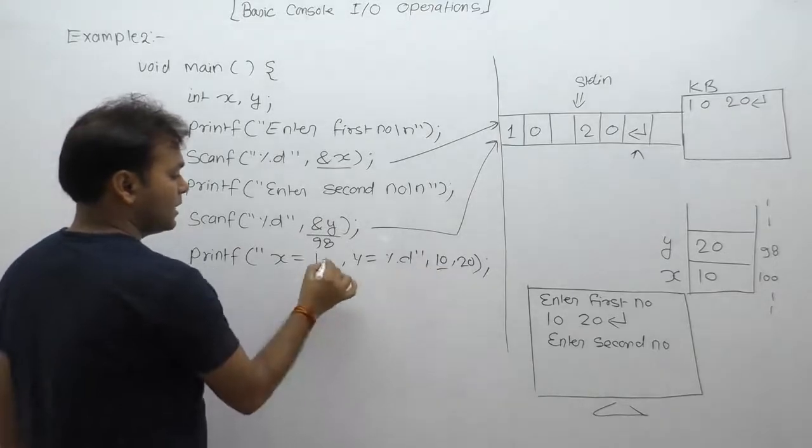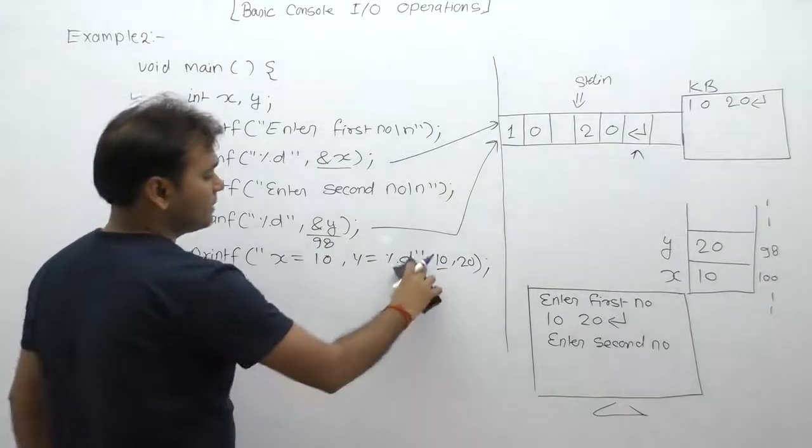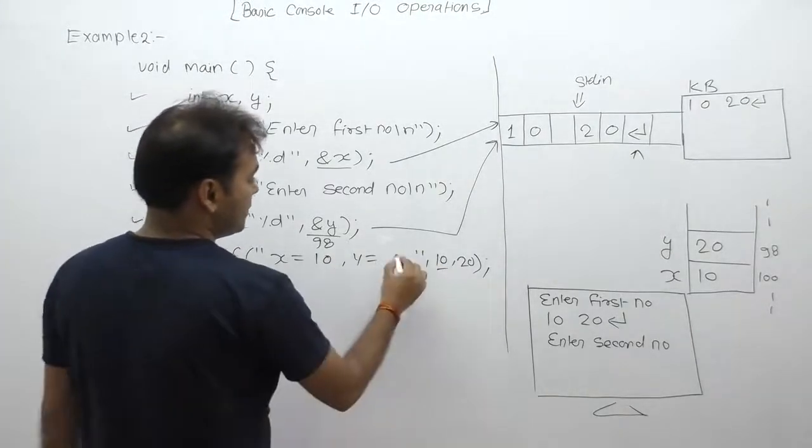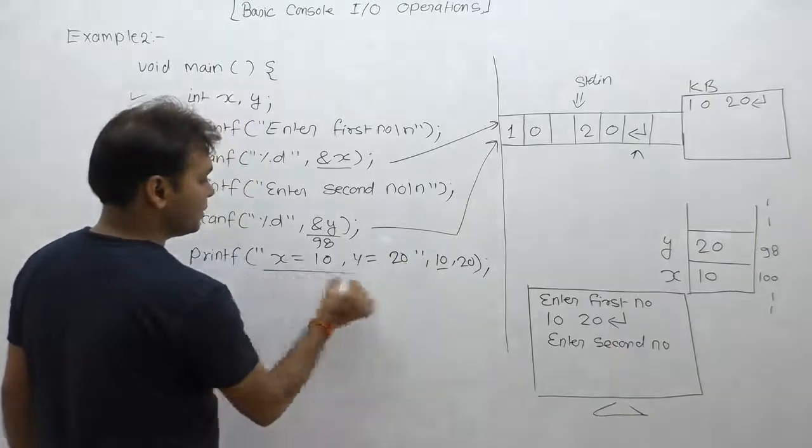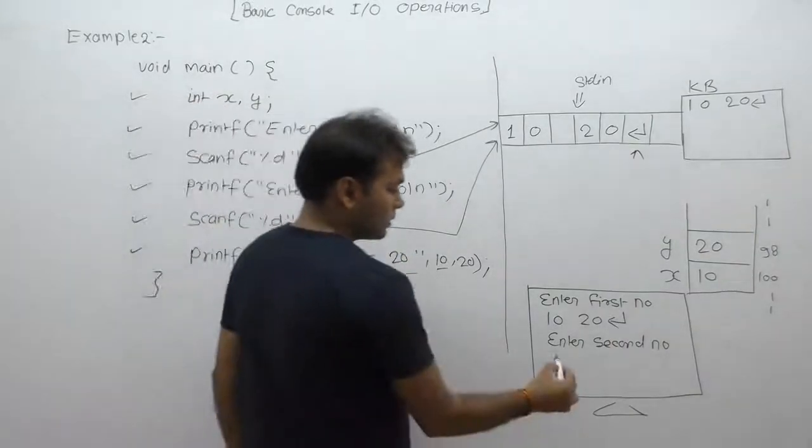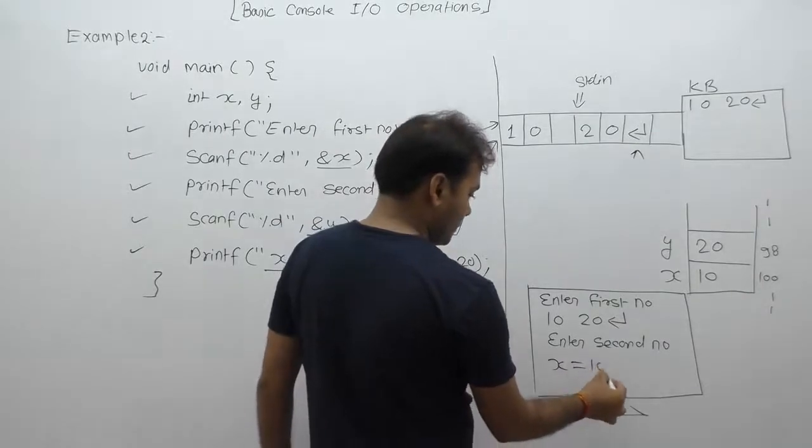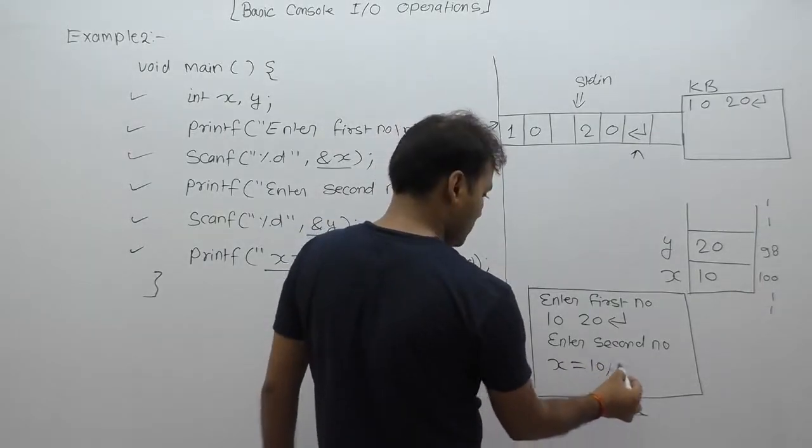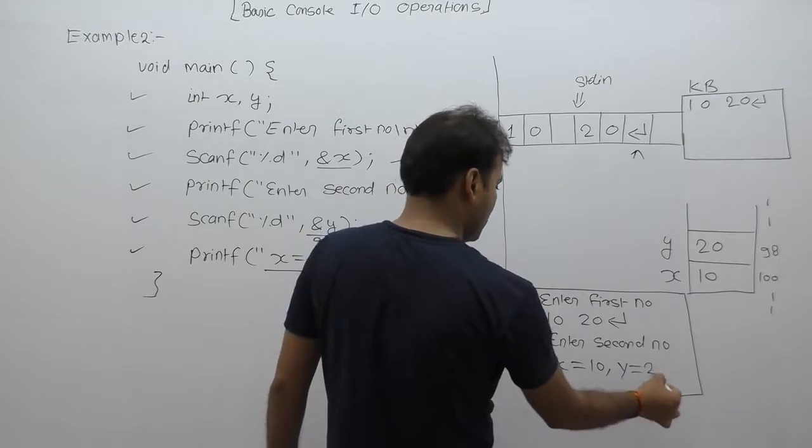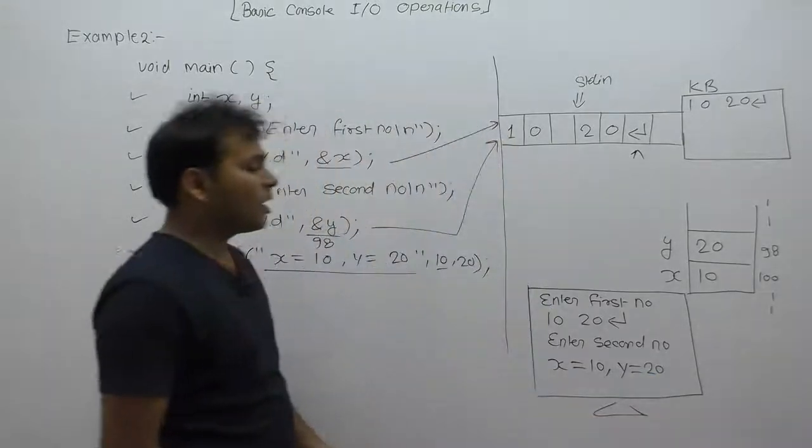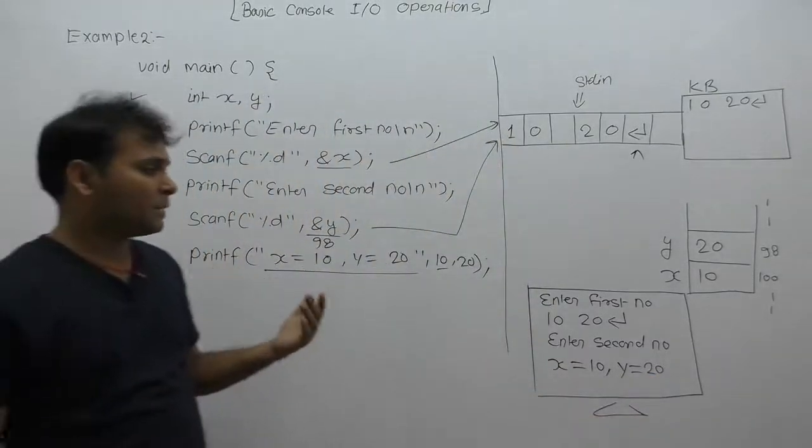Second percent d ke place par replace karenge second value as 20. Final message karenge, display par se x equals to 10, y equals to 20. This is the result or output. This message.